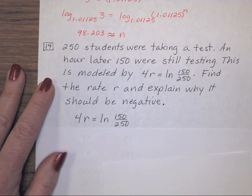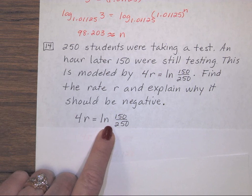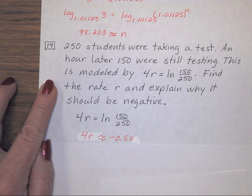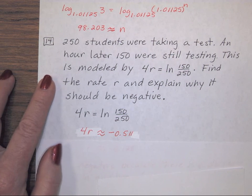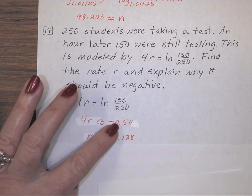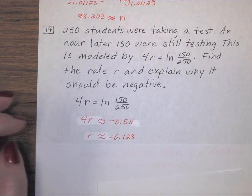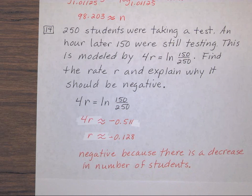So here's our equation. I need to solve for r. I first decided to go ahead and evaluate the natural log of 150 over 250, and got approximately a negative 0.511. To finish getting r by itself, I need to divide by 4, and when I take this value and divide it by 4 in my calculator, I get a negative 0.128. So why is this rate negative? Because there is a decrease in the number of students. It's going down.